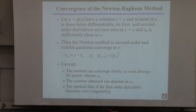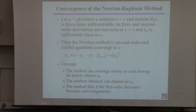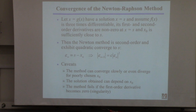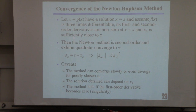Now the theory part: what we want to understand is when this method works and how fast it converges. Just having a method that works isn't enough if it converges really, really slowly — you want it to converge fast too. This theorem tells you when it works and, if it does work, how fast it converges.